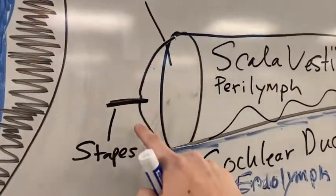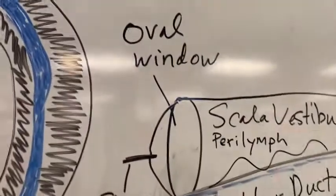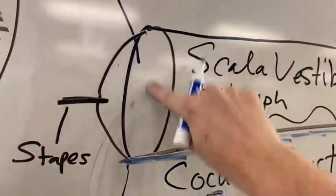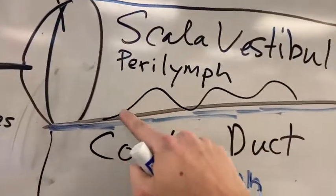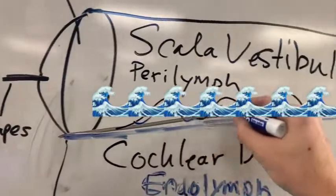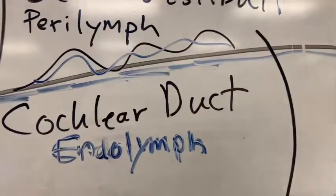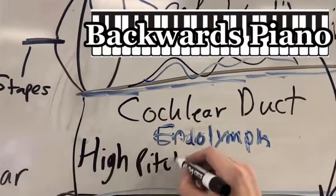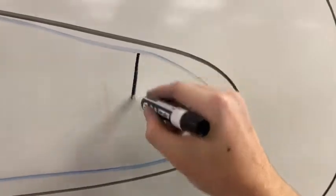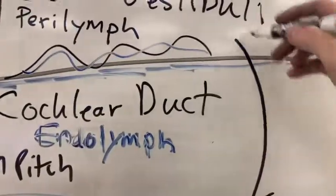Where do we pick up? We were at the stapes. The stapes is shaken and it's going to push against what's called the oval window — a membranous area against the scala vestibuli. That's really going to start some waves in the perilymph. These waves are eventually going to cross over at some point. And it's like a piano — this one starts with high pitch at the beginning and goes all the way to low pitch at the far end. That's how pitch is sensed in the cochlea after we unwind it. Whatever pitch it is, it crosses at the corresponding location.